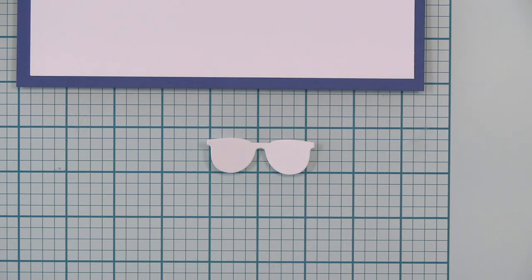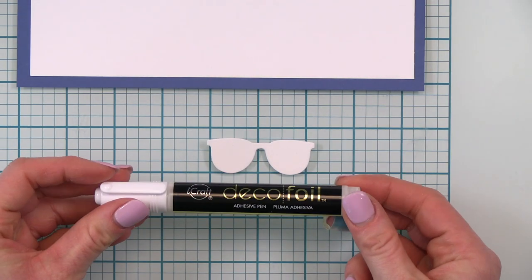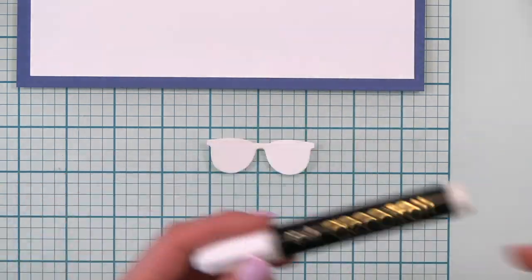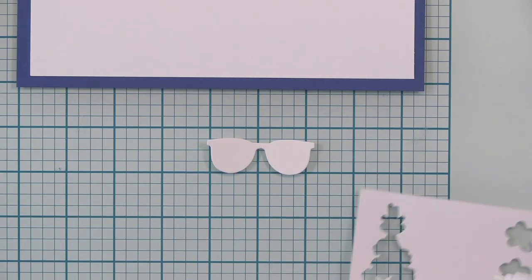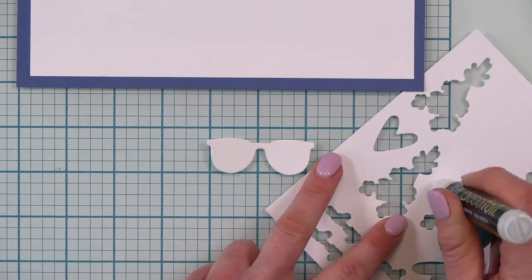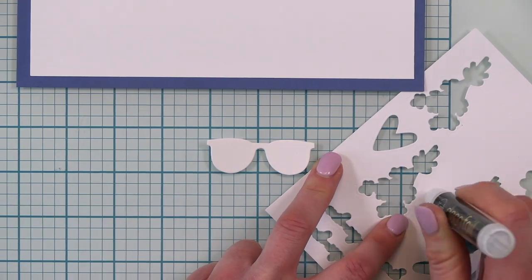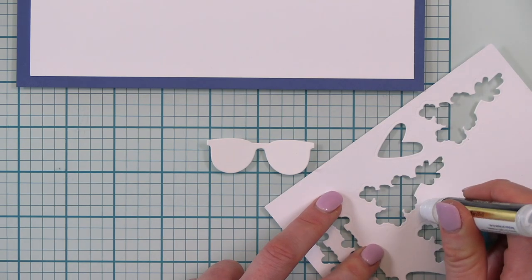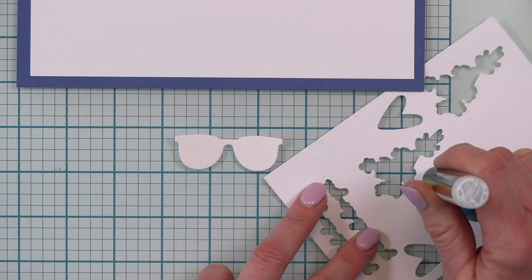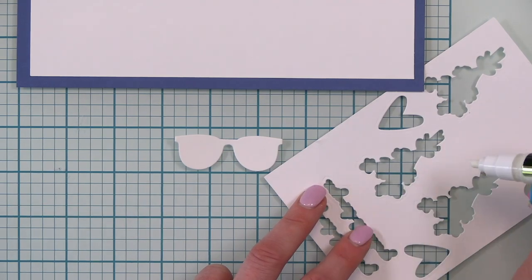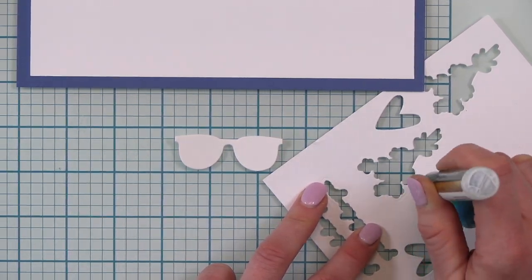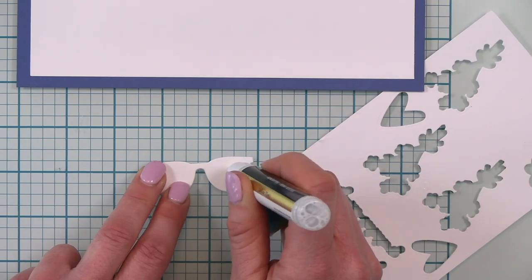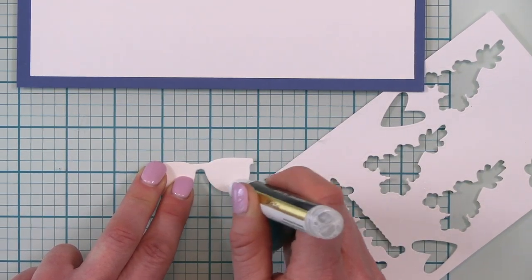So I have my solid white sunglasses here that I cut using the Tailored Expressions die and now I'm using the deco foil adhesive pen and some deco foil to create something really fun. So the first thing that you want to do when you pull out this adhesive pen, this is such a fun product, is just prime it and that generally means holding the nib down so that the adhesive can start to flow through the nib. So just grabbing a piece of scratch paper and just pressing that down.